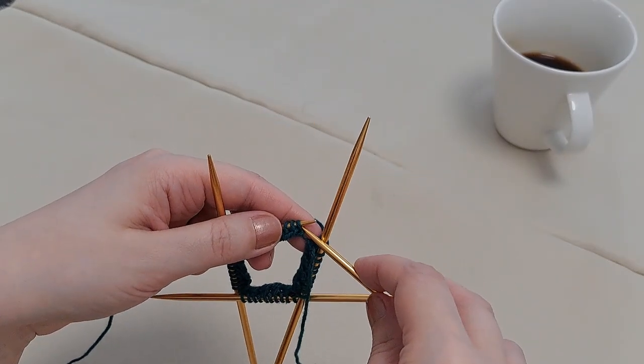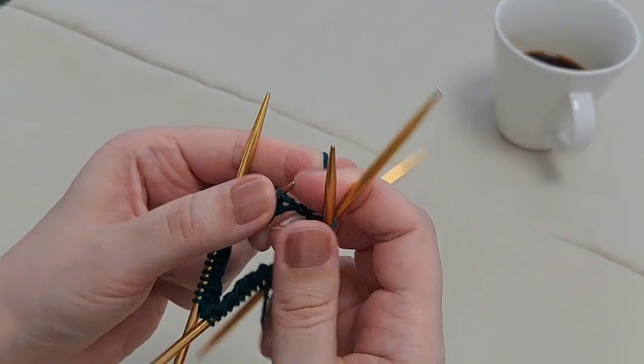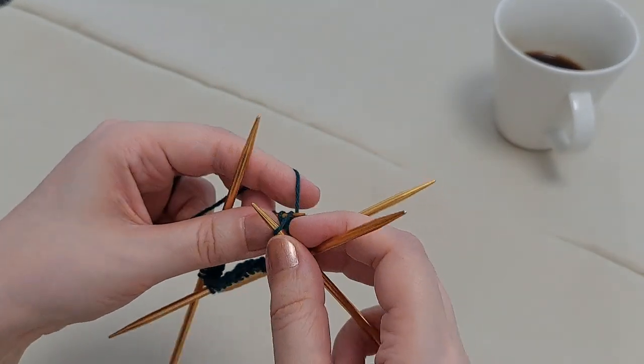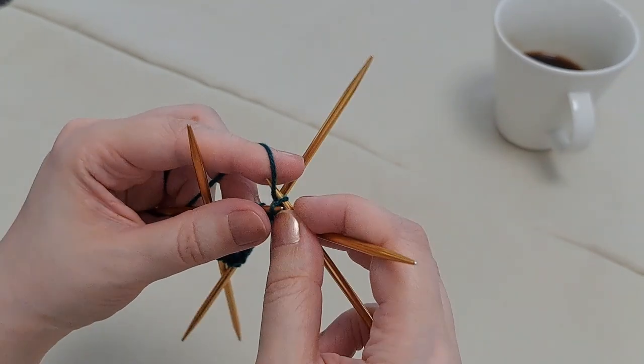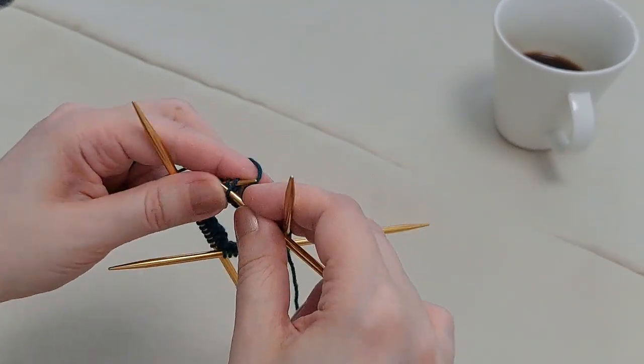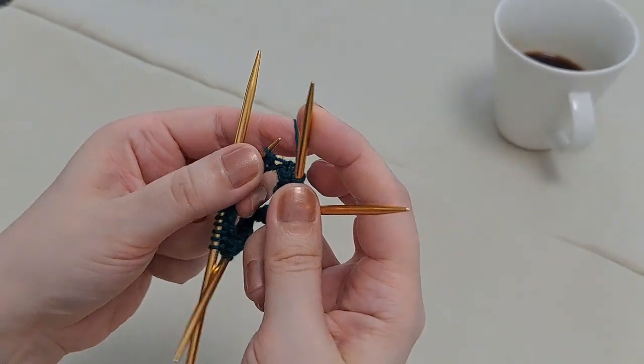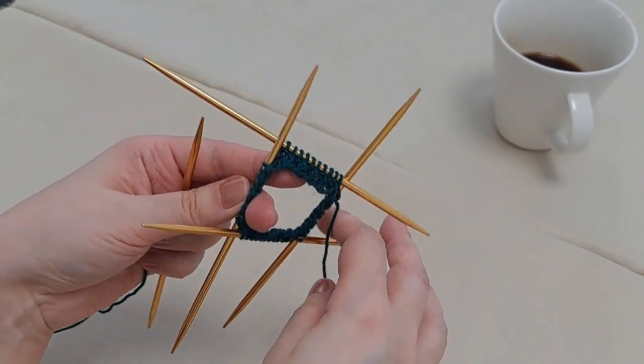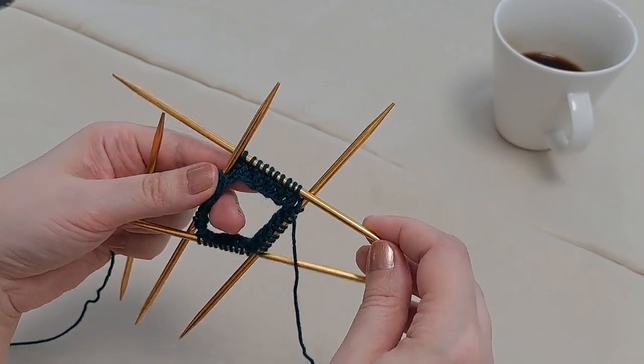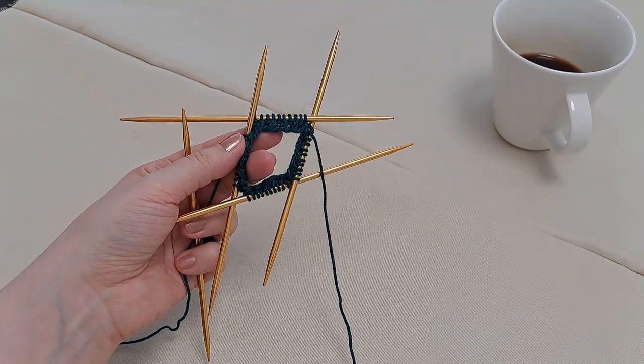In order to twist a knit stitch you want to just knit it through the back loop. The purl stitch is worked as normal and the next knit stitch worked through the back loop. The purl stitch is worked as normal and it takes a few rounds to see the difference so I'm going to work say 10 rounds and return to you.